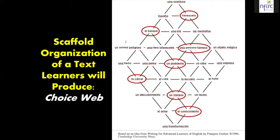There are examples in the rest of this presentation about how you might scaffold the organization of a text once learners have brainstormed their ideas. For example, if they're going to write an adventure story, I might do something like this where they make choices that help them see the path for their story — the adventure is going to take place in Spain or in Venezuela, and they chose Venezuela.